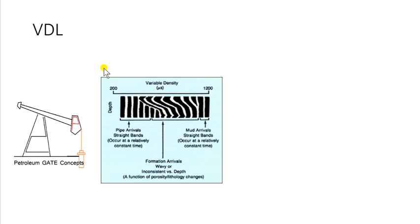These wavy lines correspond to those signals which have passed into and through the formation before passing back through the cement sheath and the casing to the receiver.